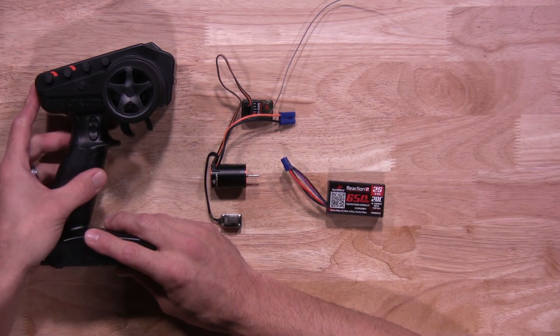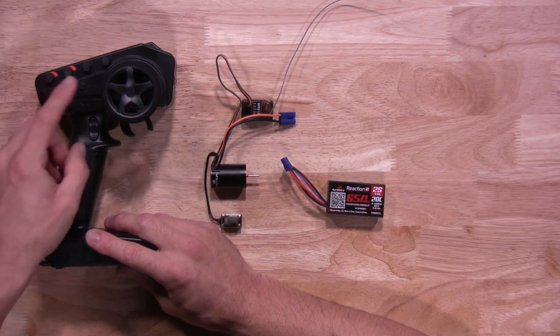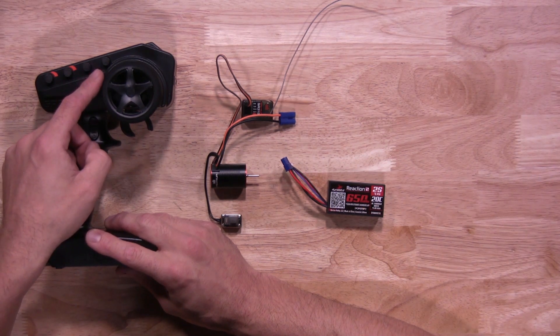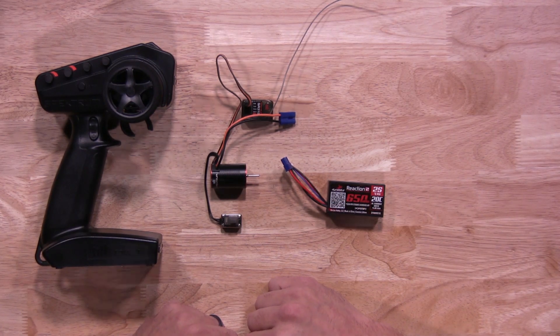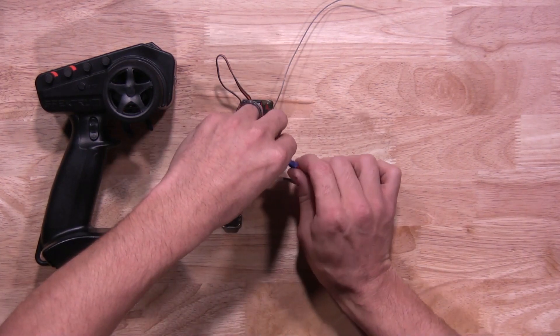So let's start by turning our transmitter on first. Once your transmitter is powered on, you want to make sure the throttle trim is set to neutral like we have here. Next, you'll grab a recommended battery for the 2-in-1 unit. Once you have that, go ahead and plug it in. Again, make sure the polarity is correct.